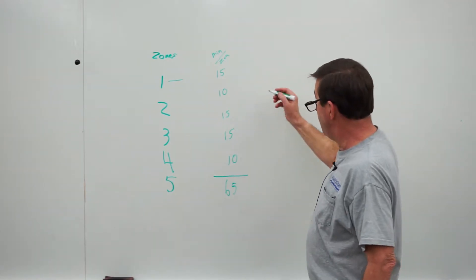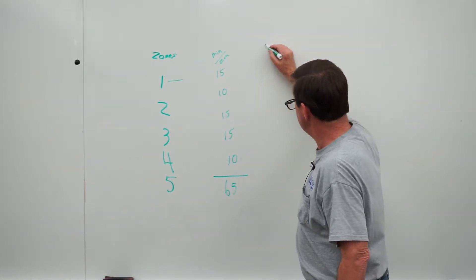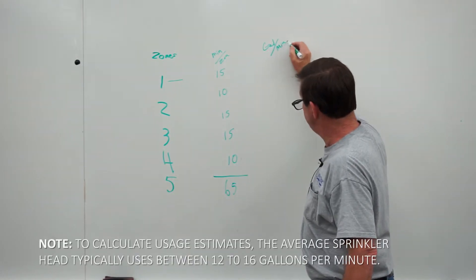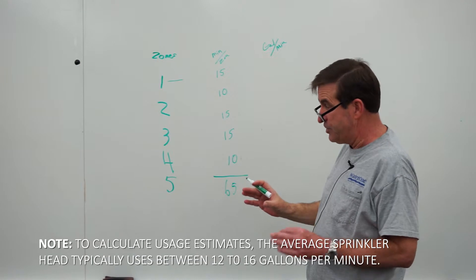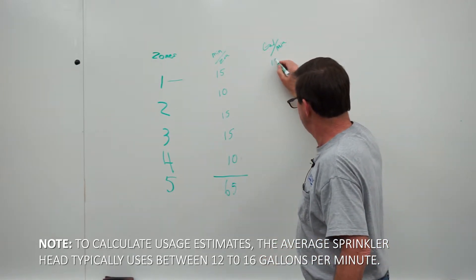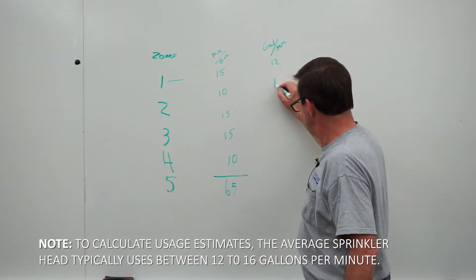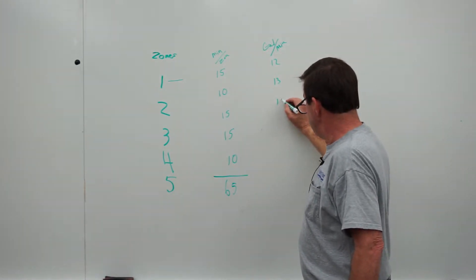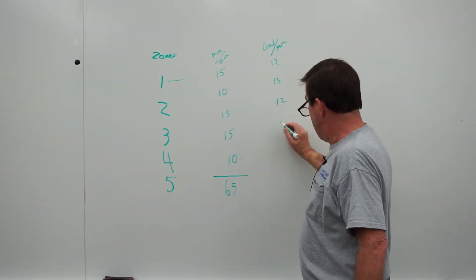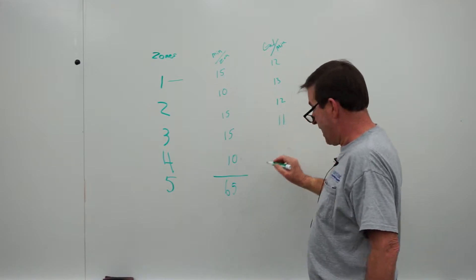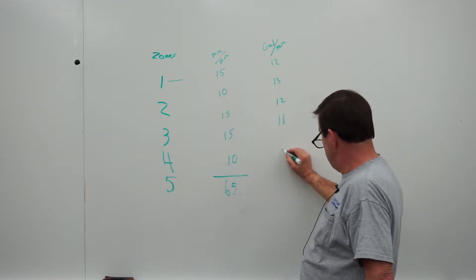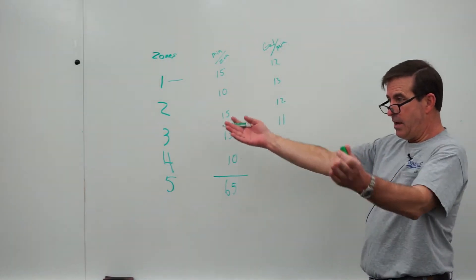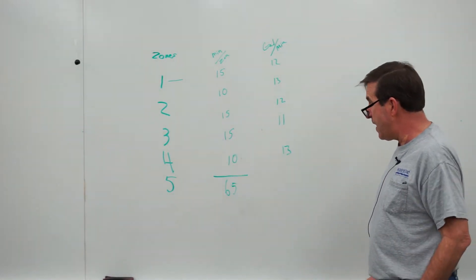When it turns on, this sprinkler uses gallons per minute. And these numbers are pretty indicative of what happens in Johnson County. We'll say 12 gallons in this zone, 13 gallons in this zone, this one is 12 gallons, this one is 11 gallons, and this one here is 13 gallons. Water going through a pipe, getting spread out on the yard, making the green grass happy.